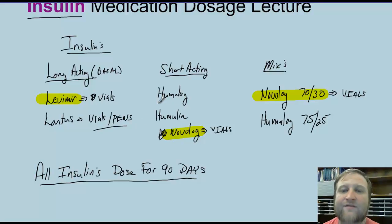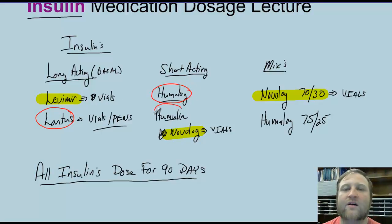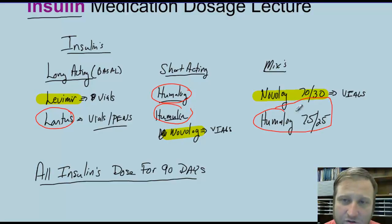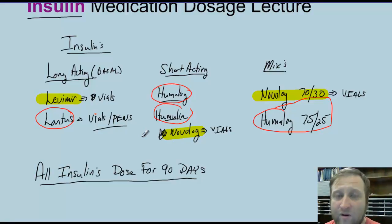Most of our patients like pens. They're easy — you can keep them in your pocket and you don't need a separate needle and syringe to withdraw from a vial. So Levemir, Novolog, and Novolog 70-30 only come in vials now. Lantus, Humalog, Humulin, and Humalog 75-25 still come in vials or pens, though I forecast most will eventually become vial-only.